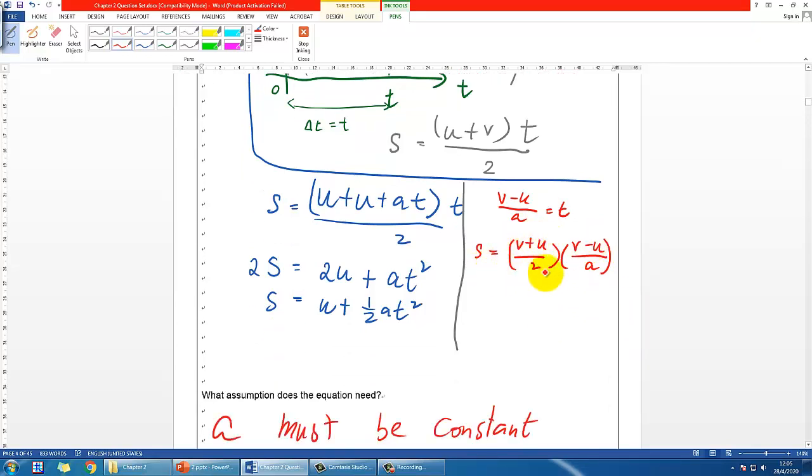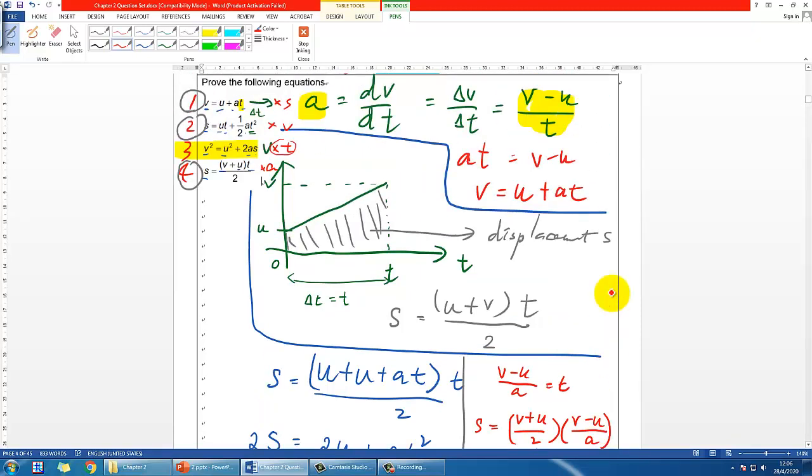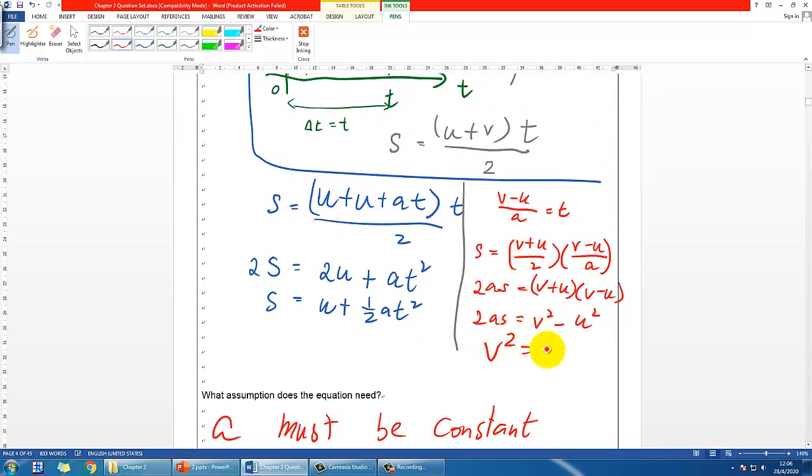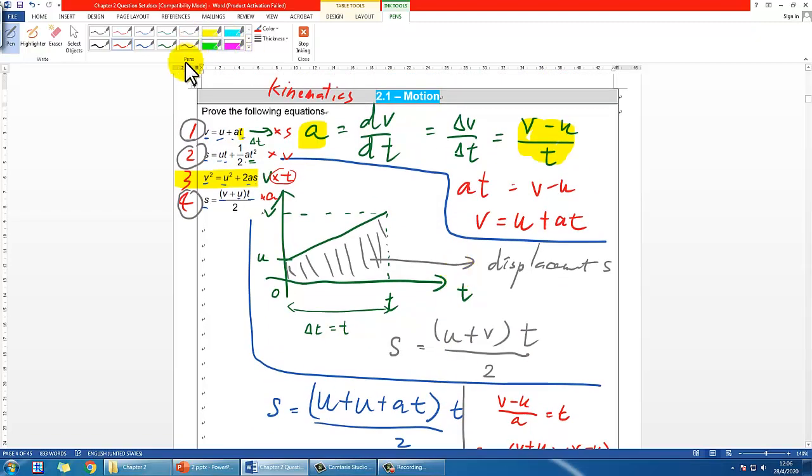Rearranging, 2AS = (V + U)(V - U). This is the algebraic identity X + Y times X minus Y from mathematics, which gives V² - U². So we have V² - U² = 2AS. Rearranging to standard form: V² = U² + 2AS. This is how we prove equation number 3.